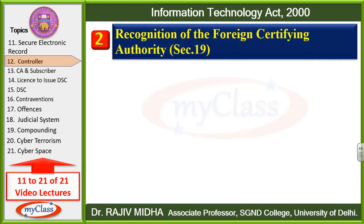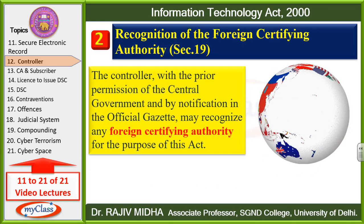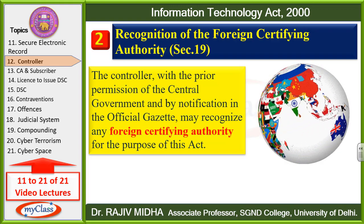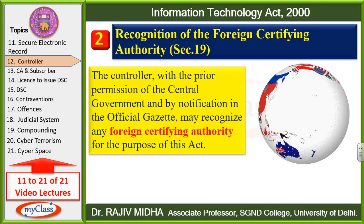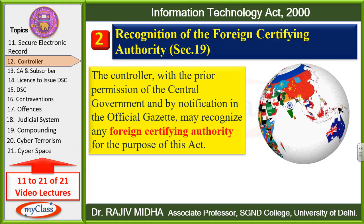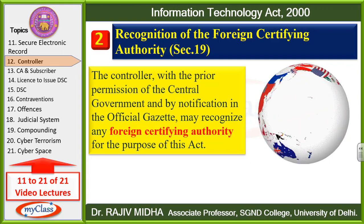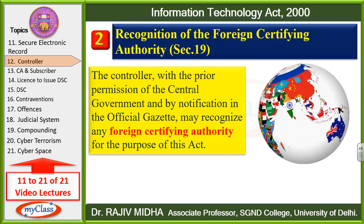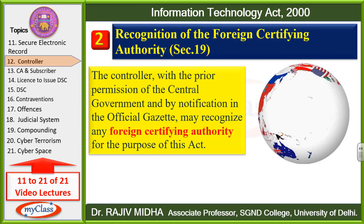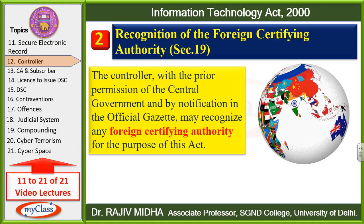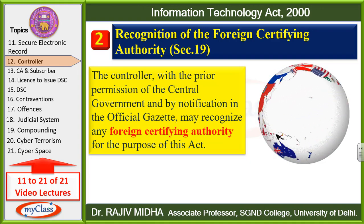Now the second function: recognition of Foreign Certifying Authority. The controller, with the prior permission of Central Government and by notification in the official Gazette, may recognize any Foreign Certifying Authority for the purpose of this act. India ke andar agar koi foreign agency aakar Certifying Authority ke roop mein kaam karna chahe, to yahan par kaam kar sakti hai. Iske liye controller Central Government se permission lega aur official Gazette ke andar isko mention kar diya jaayega.